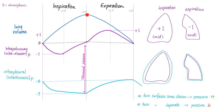Now let's expire. The lung volume is decreasing, the pressure is increasing, pushing the air to the outside, and now it's back to normal. Before you begin inspiration, the intrapulmonary pressure is atmospheric. At the end of inspiration, it's atmospheric. At the end of expiration, it's atmospheric. The crest and trough are at mid-inspiration and mid-expiration — the greatest deflection is at mid-inspiration or expiration.